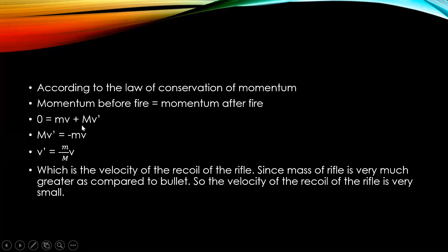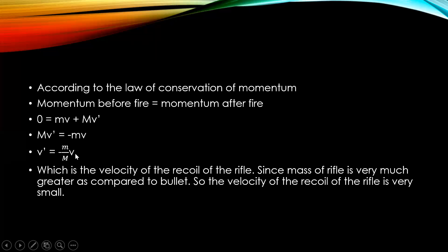The value before fire is equal to 0, and the value after fire is mv plus capital M times V'. Rearranging, we get MV' = -mv, so V' = -(m/M) × v. This gives us the recoil velocity of the rifle. If we know the mass of the rifle, the mass of the bullet, and the velocity of the bullet, we can find the recoil velocity. The recoil velocity of the rifle will be very small. In this way we can find the momentum, velocities, and forces of explosion.